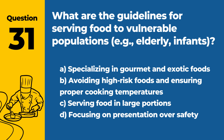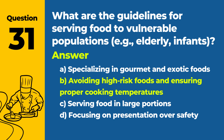Question 31: What are the guidelines for serving food to vulnerable populations, such as the elderly and infants? a. Specializing in gourmet and exotic foods. b. Avoiding high-risk foods and ensuring proper cooking temperatures. c. Serving food in large portions. d. Focusing on presentation over safety. Answer: b. When serving vulnerable populations, it is important to avoid high-risk foods and ensure that food is cooked to appropriate temperatures to prevent foodborne illness.